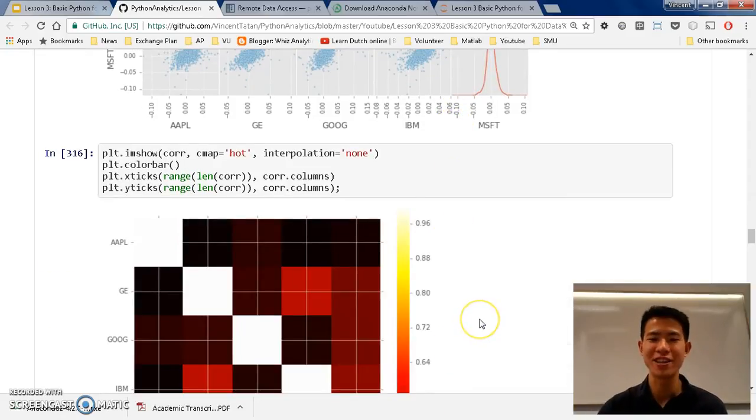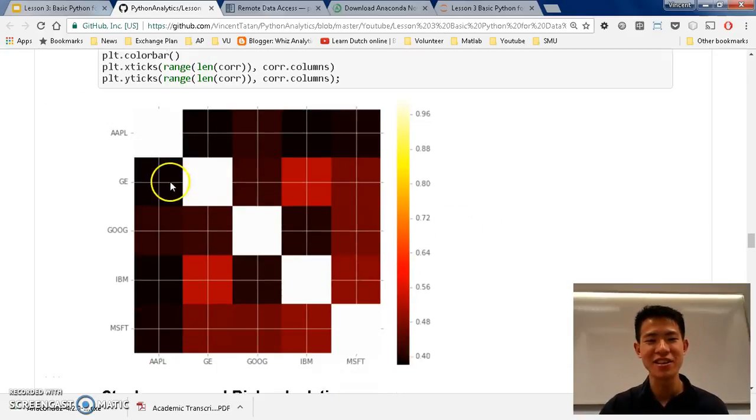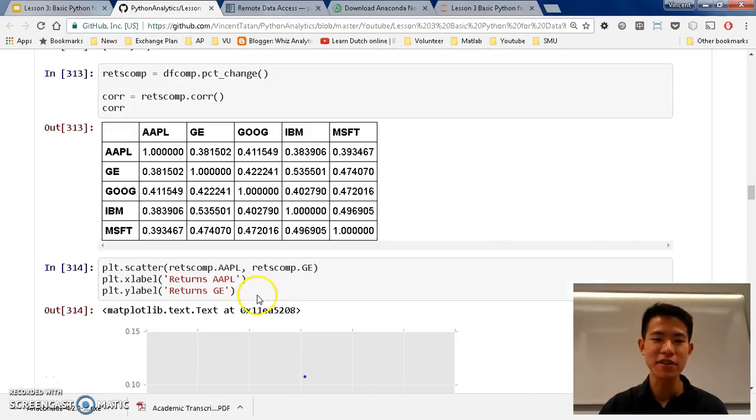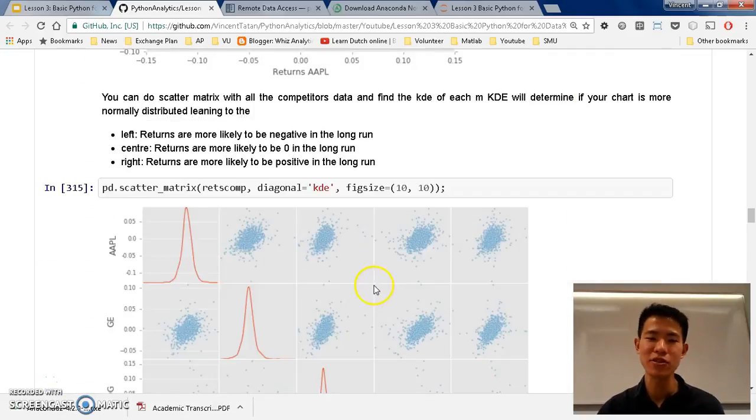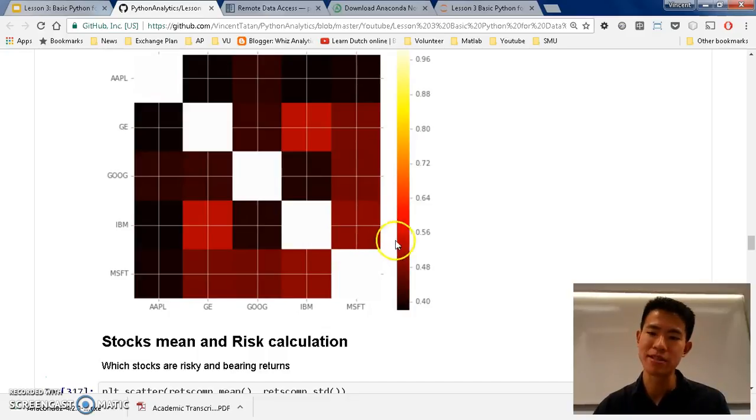And afterwards, you have the correlation. The heat map tells you that IBM is very correlated to GE. And if you see the graph here, it's 0.5. So it's very nice correlation. Maybe you can predict GE stock price by looking at the IBM performance.